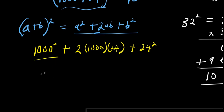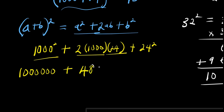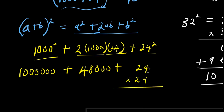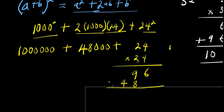So, 1000 squared is 1000 times 1000, that will be 1,000,000. Plus 2 times 1000 is 2000, and 2000 times 24 gives us 48,000. Plus 24 times 24: 4 times 4 is 16, carry 1; 4 times 2 is 8, plus 1 is 9; 2 times 4 is 8; 2 times 2 is 4. Adding together: 576. So 24 squared is 576.